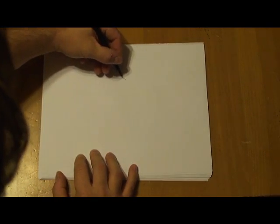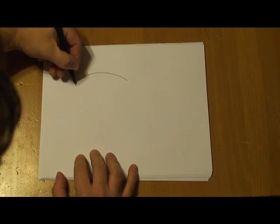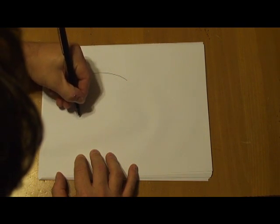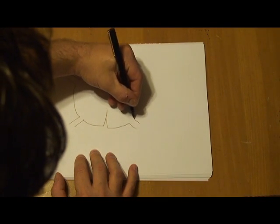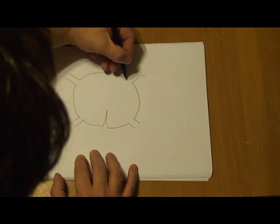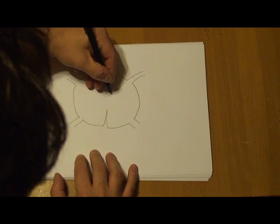To understand the autonomic nervous system, we'll start with something we know relatively well already, the spinal nerve. So here we have a cross-section of the spinal cord, we'll draw in the gray matter.